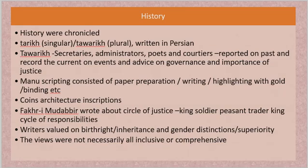Fakhr-i-Mudabbir's circle of justice is important to remember. He said the king needs soldiers to run the kingdom well. Soldiers need to be paid, and for payment they need peasants to grow agricultural crops well. Peasants must be prosperous so they pay taxes, so the king gets money. You also need traders who pay taxes and ensure peasants' produce is sold to the market. So the king depends on soldiers, soldiers depend on income, and income comes from peasants and traders who produce, sell, and pay taxes — this is the cycle of responsibilities.